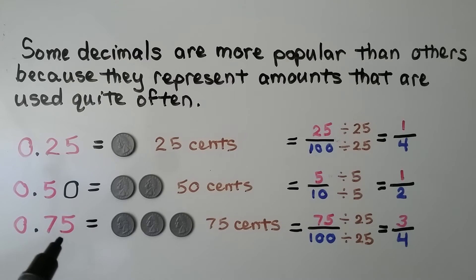And 75 hundredths is like 75 cents. 75 one-hundredths is equal to 3 fourths. That would be 3 fourths of a dollar.